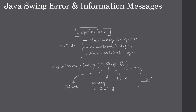The important message types are: plain message (no icon), warning message, informational message, and error message. In this example we will see how to use showMessageDialog to display both informational and error messages. Now let us go to the Eclipse demo.